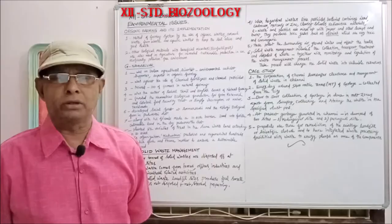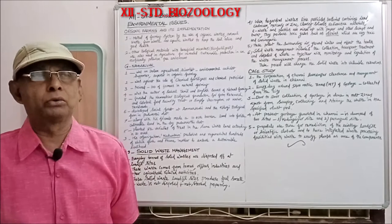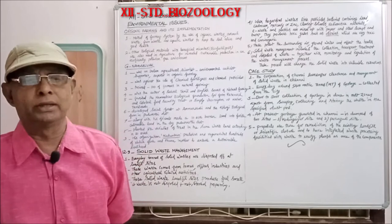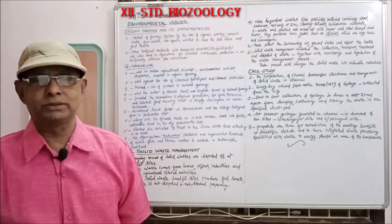When hazardous waste like pesticides, batteries containing lead, cadmium, mercury or zinc, cleaning solvents, radioactive materials, e-waste and plastics are mixed up with paper and other scraps and burnt, they produce toxic gases such as dioxins, which are very toxic and carcinogenic — meaning cancer-causing substances.